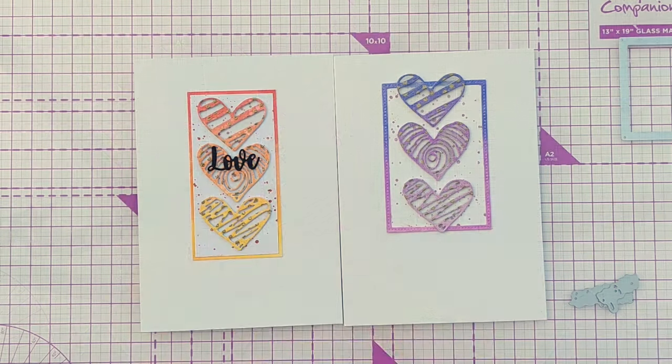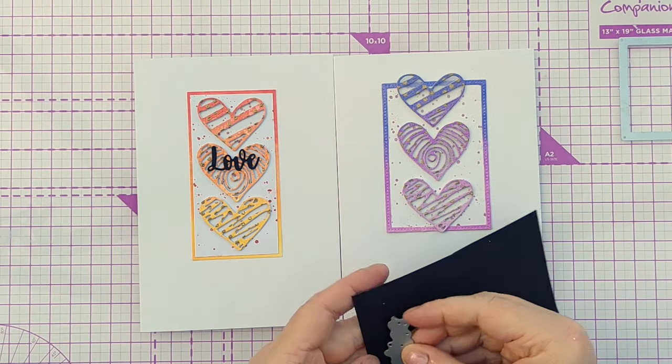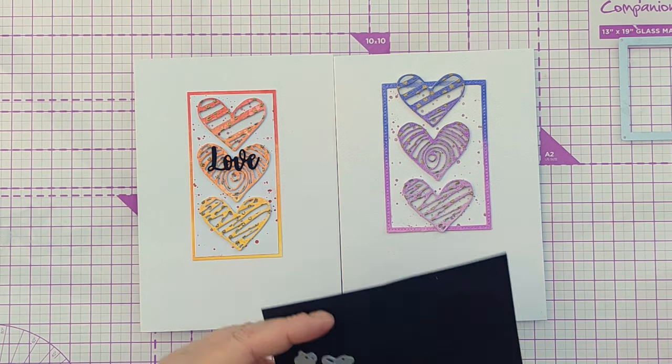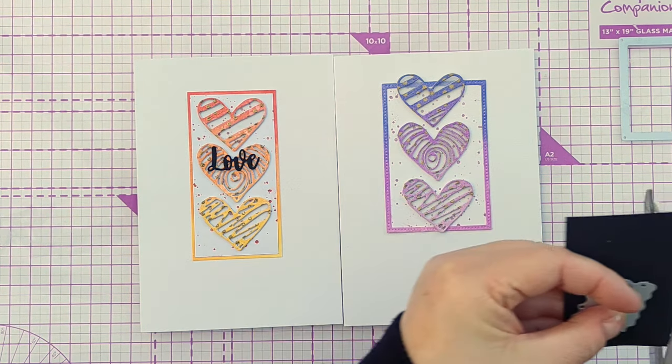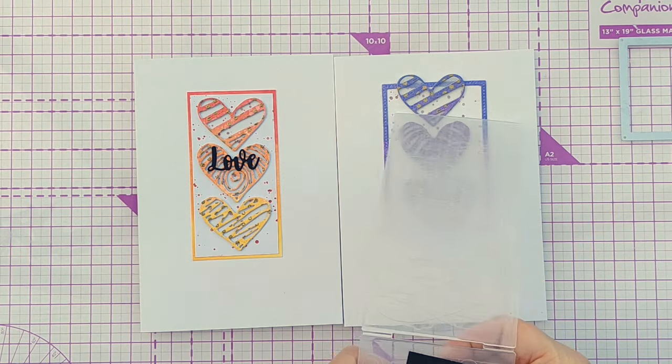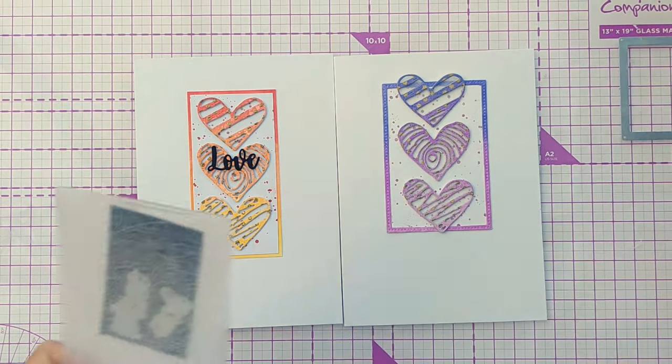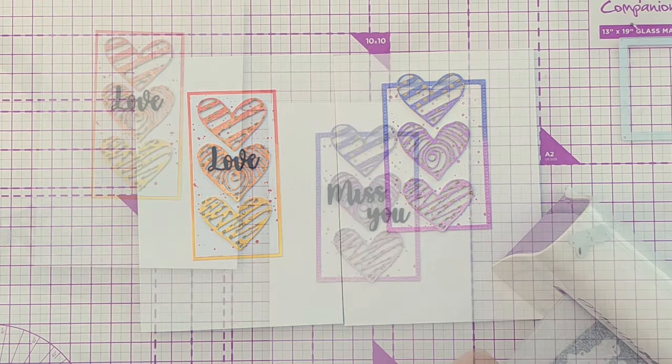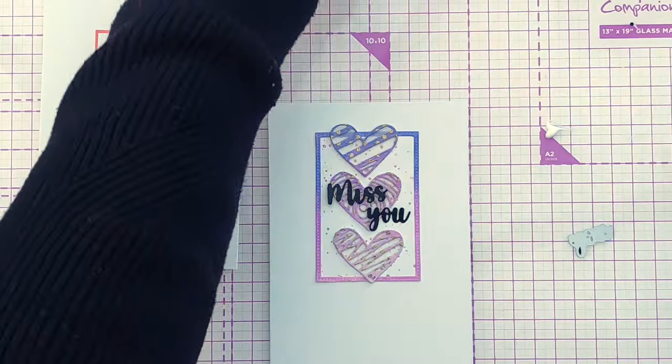Okay that'll do, I quite like that actually. I like the hearts overlapping the edge there. On the warm colored card I put the word love but this has given me some somber vibes so I'm going to use the same sentiment set, the same style of word, but use the miss you. I'll use a little bit of glue to add those I think.